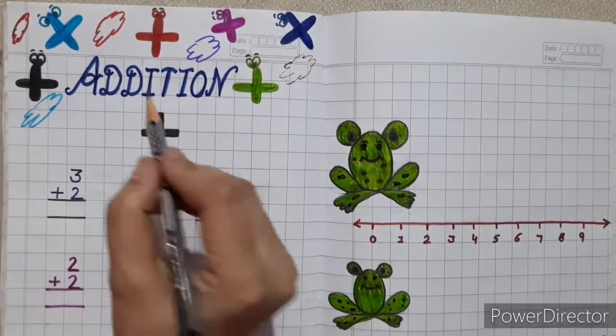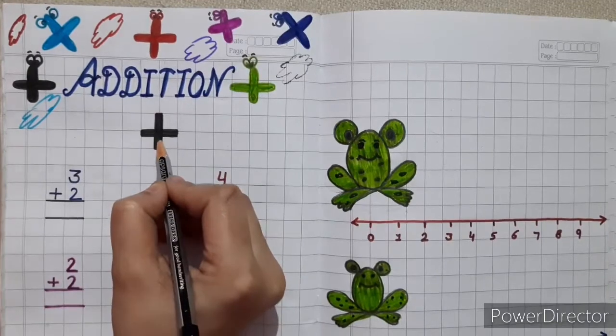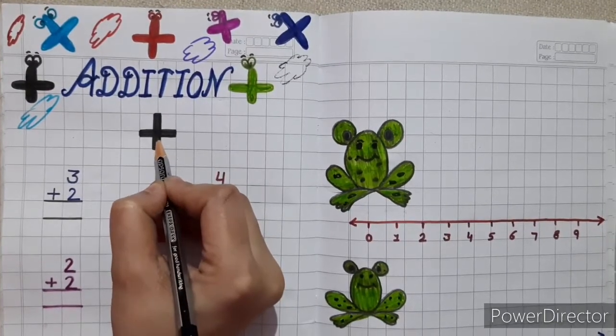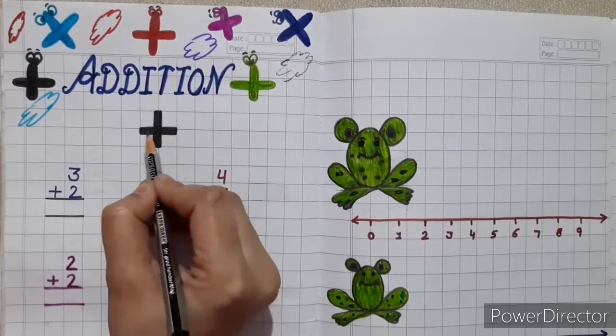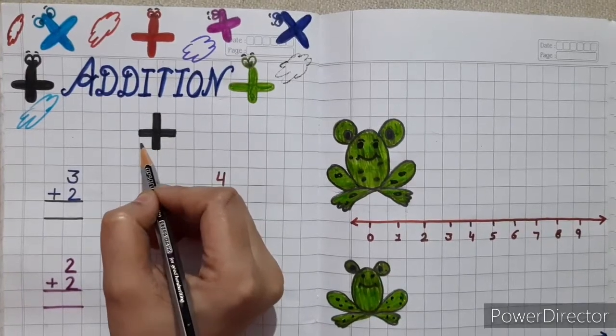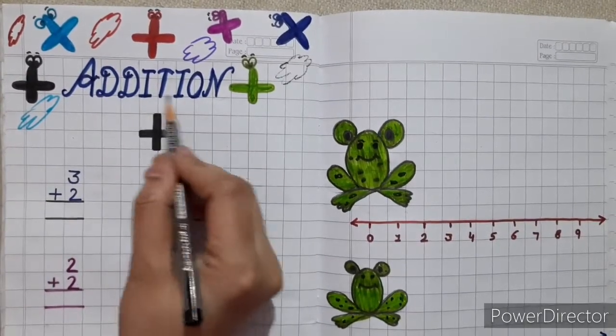Kids, when we do addition, we use this symbol. This symbol is called addition or plus. Now, we will learn various methods of addition.